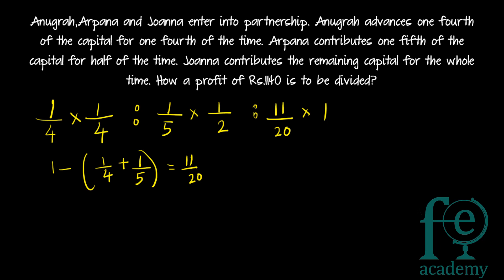You may be confused, so let me explain. Let X be the capital. Anigradh's contribution will be one-by-four X, Arpanna's will be one-by-five X, and Johanna's will be eleven-by-twenty X. Even if you don't write X, it is the same — this X will cancel off anyway. That is why I didn't write X here. If you want to understand more, you can write X and then cancel off.